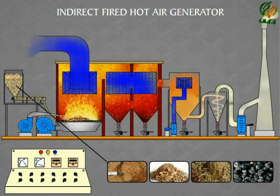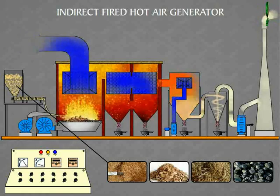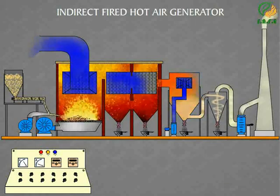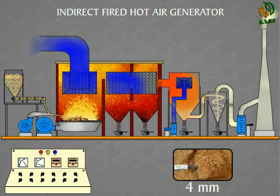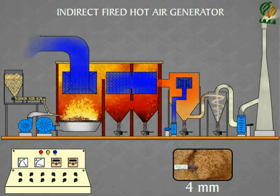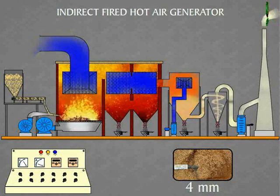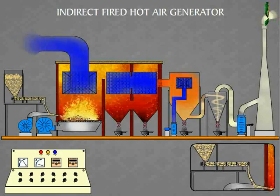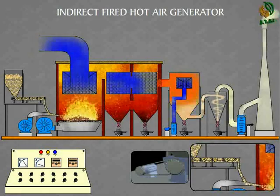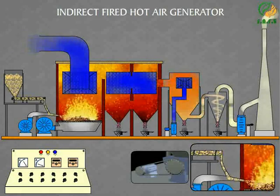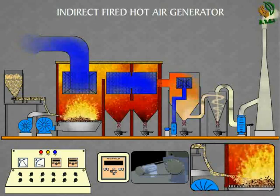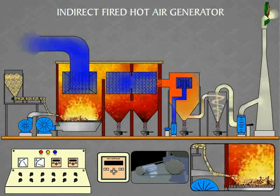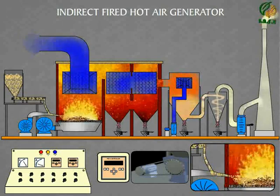Wood chips and sawdust can also be used as fuel. The size of the fuel particles is usually kept under 4mm. From here the fuel is directed towards the furnace with an automatic screw conveyor belt that is controlled by a PID controller, and the speed of this belt is regulated in the PID panel.